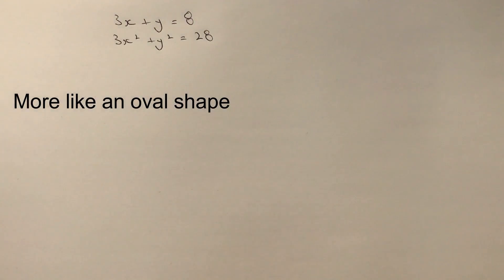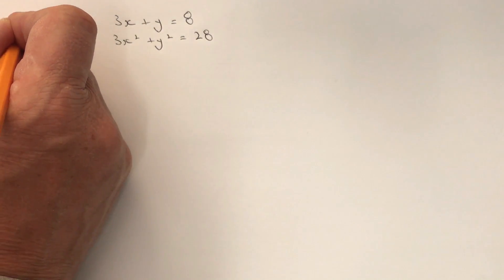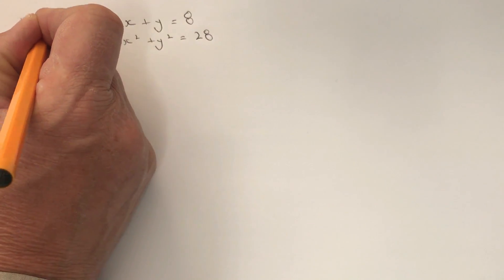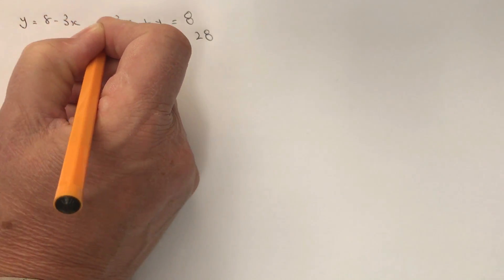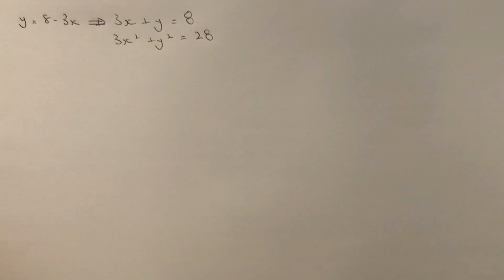So what we're going to do is look at the first equation and say well, if 3x plus y equals 8, then it's also fair enough to say that y equals 8 minus 3x. That's exactly the same as this equation over here.